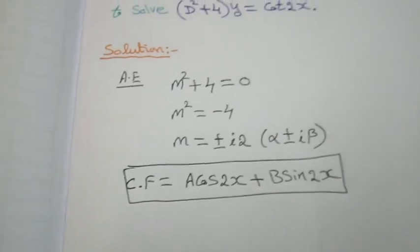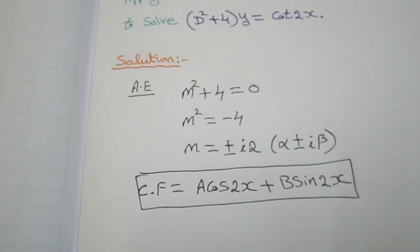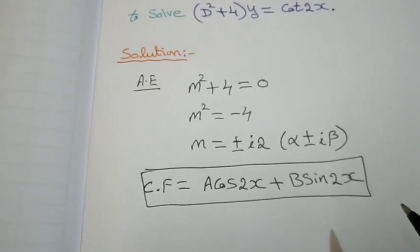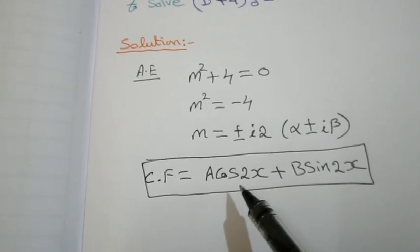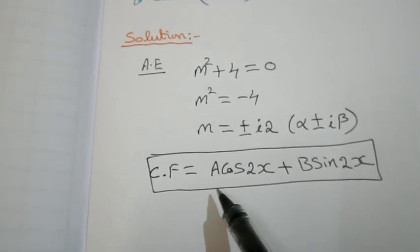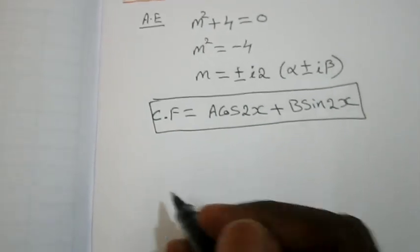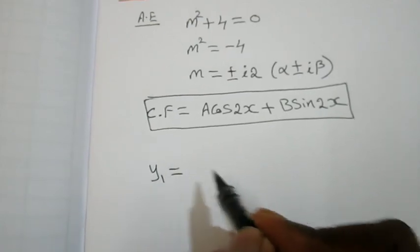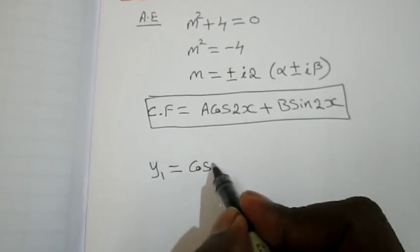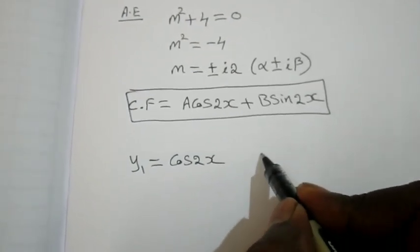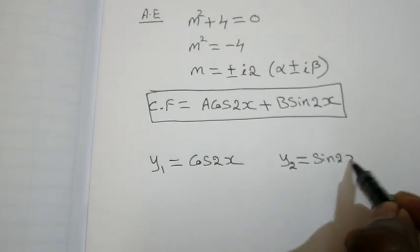Next, I am going to find the particular integral. In the method of variation of parameters the method is entirely different. From the complementary function we find y1 and y2: y1 is always the coefficient of A, and y2 is always the coefficient of B. So y1 = cos 2x and y2 = sin 2x.